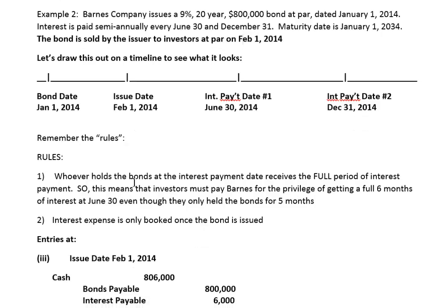Remember our rules: whoever holds those bonds is going to get a full six months of interest from January 1st to June 30th. But in order to get the full six-month interest payment, because they only bought in on February 1st — which is five months from February 1st to June 30th — they have to pay one month's interest up front. So investors have to pay Barnes for the privilege of getting a full six months of interest at June 30th, even though they only held the bonds for five months.